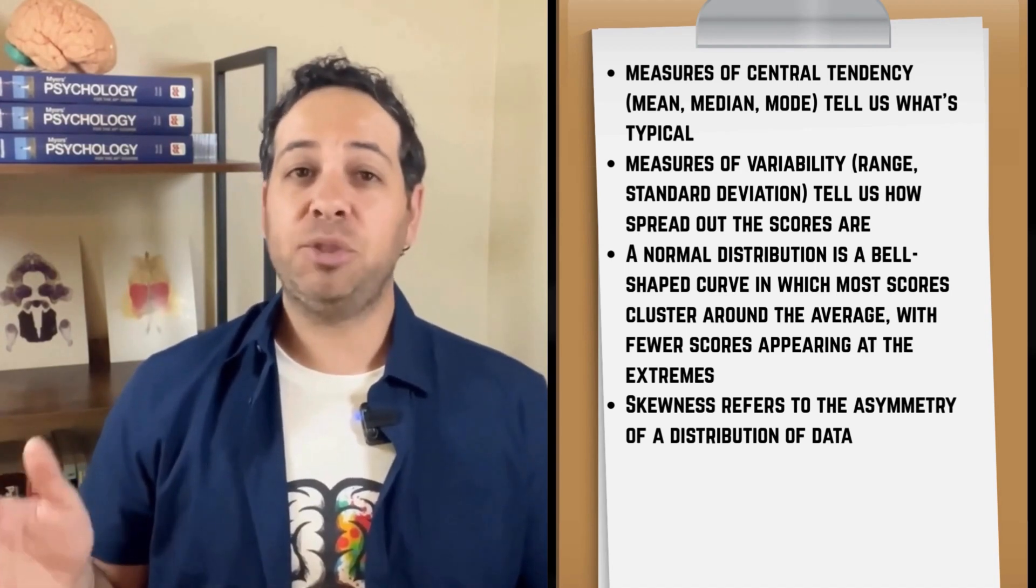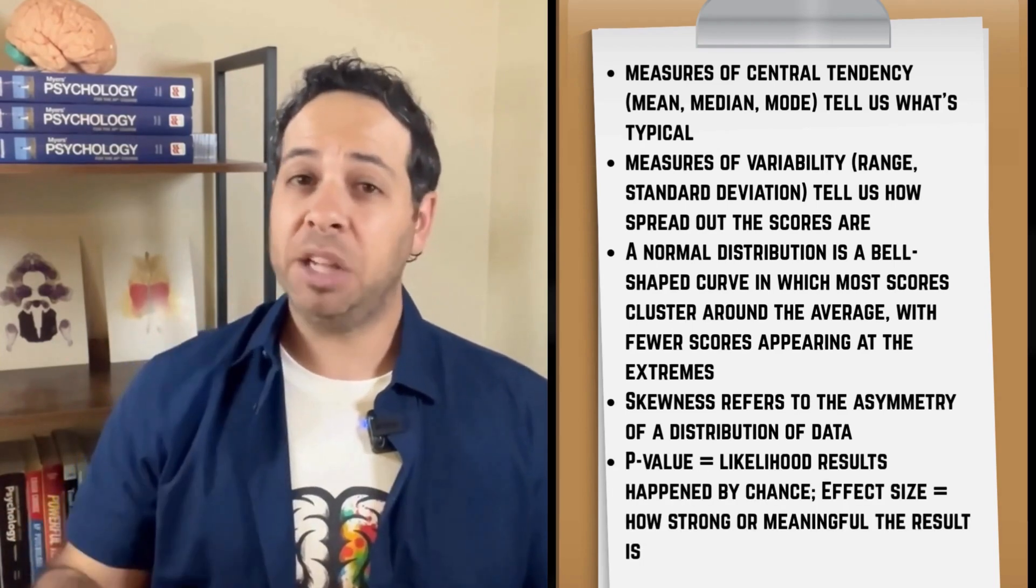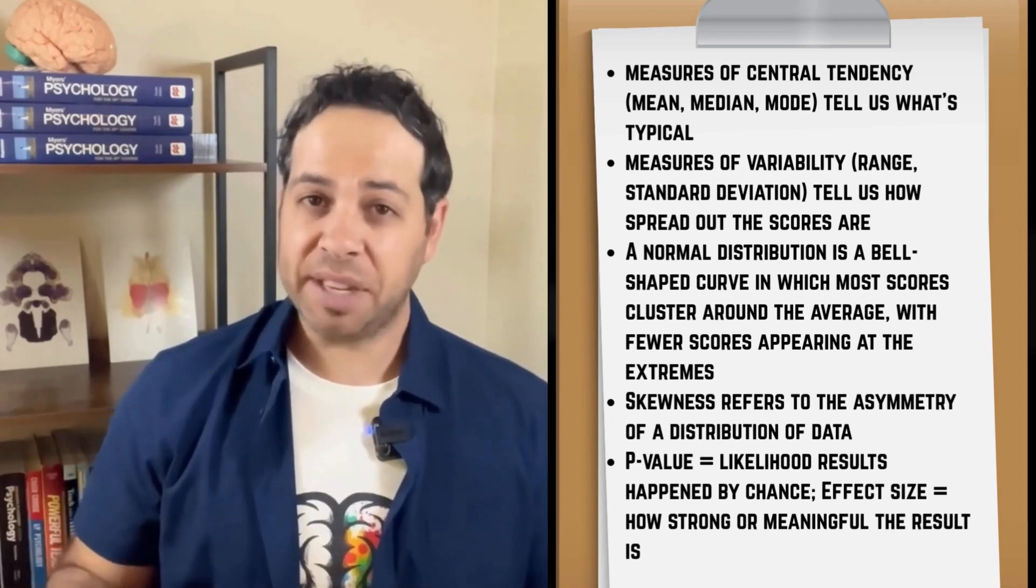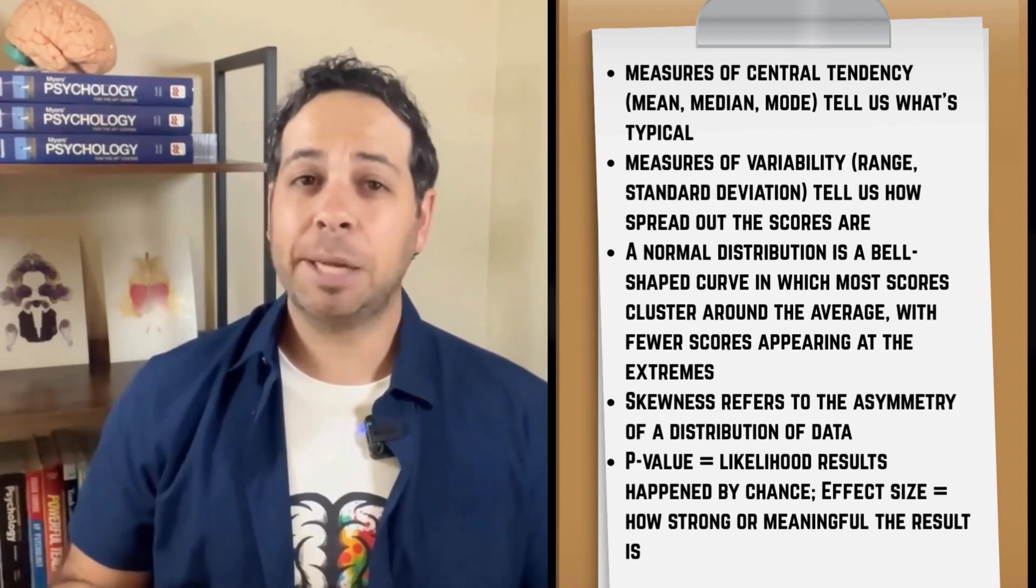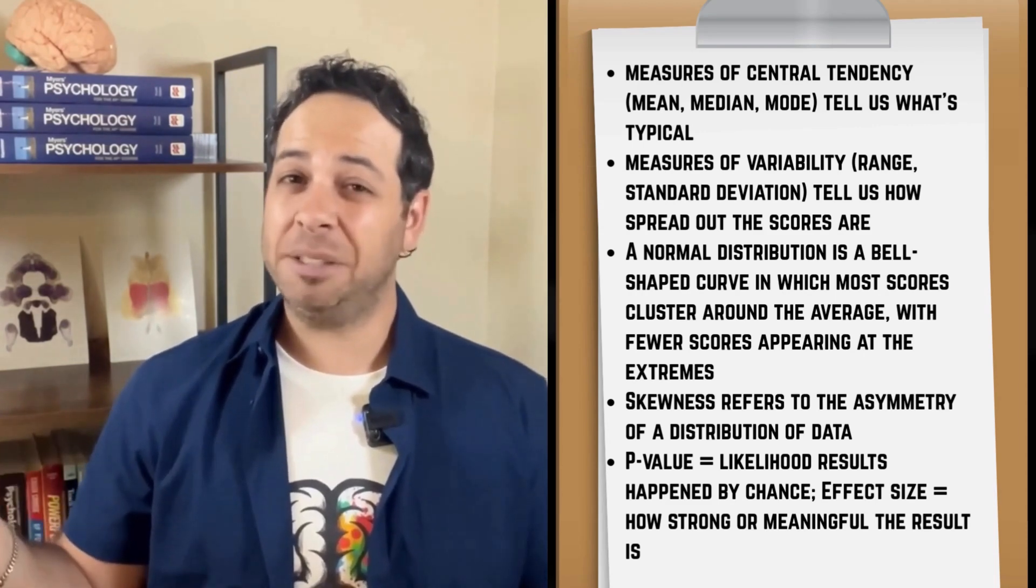A normal distribution is that nice bell-shaped curve where most scores cluster around the average. Skewed distributions happen when extreme scores crash the party and drag the mean with them. Cue the sad whale. P-values help us test for statistical significance, can we trust the results. And effect size helps us figure out if it actually matters in real life. Okay, but is it a big deal?